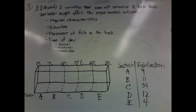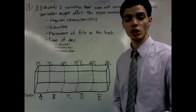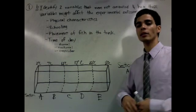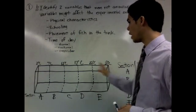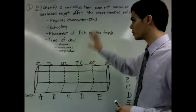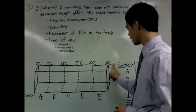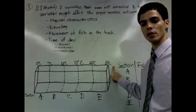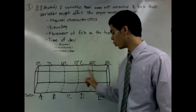1b asks us to identify two variables that were not controlled and how these variables might affect the experimental outcome. A variable is anything that's going to change during your experiment and may or may not affect the outcome of your experiment. So, we would like to control anything that we can, any variable that we can, so that our outcome is not going to be dependent upon those external factors, and will be dependent only upon the thing that we are changing. In this case, the temperature from 2 degrees Celsius to 27 degrees Celsius was well controlled and was changed according to the section of the tank.